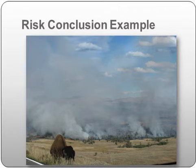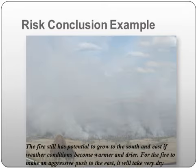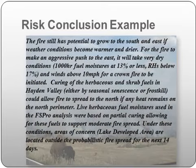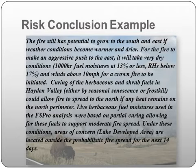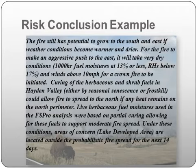Here's an example of a risk conclusion from an extended risk assessment for a fire in Yellowstone National Park: The fire still has potential to grow to the south and east if weather conditions become warmer and drier. For the fire to make an aggressive push to the east, it will take very dry conditions, with 1,000-hour fuel moistures at 13% or less and RHs below 17%, and winds above 10 miles an hour for a crown fire to be initiated. Curing of the herbaceous and shrub fuels in Hayden Valley, either by seasonal senescence or frost kill, could allow fire to spread to the north if any heat remains on the north perimeter. Live herbaceous fuel moistures used in the FS Pro analysis were based on partial curing, allowing for these fuels to support moderate fire spread. Under these conditions, areas of concern such as the lake-developed area are located outside the probabilistic fire spread for the next 14 days. Note that the conclusion tells the decision-maker what is most likely to happen in terms of fire spread and values of concern, as well as highlighting important assumptions and less probable conditions to watch out for in the future.